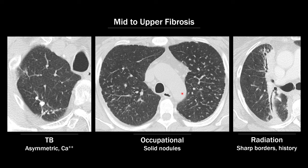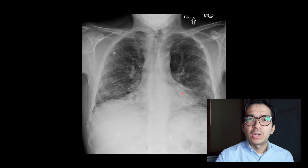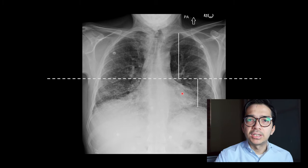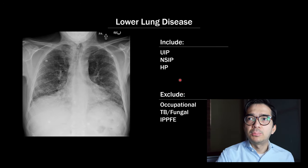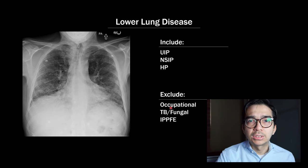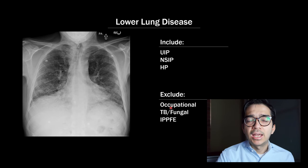How about lower lung predominant disease? If we take a look at this chest X-ray and draw a line bisecting the hyla, you can see there's a lot more lung above that line compared to below — the hyla are being retracted inferiorly — and this is a patient with lower lung disease. My main two things in the differential are going to be UIP and NSIP. I would still include HP in this differential too, because a significant number of HP patients present with lower lung disease. I would exclude occupational lung diseases like silicosis or berylliosis, and fibrosis due to TB, fungus, and IPPFE.